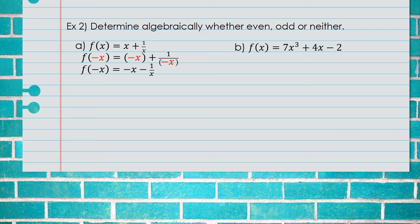Now that we have plugged in the values, we analyze the result by looking at each of the signs and comparing to the original. Does the first term have the same sign or the opposite? It has the opposite sign. The second term also has the opposite sign of the original. Since all the signs are the opposite, this must be an odd function.